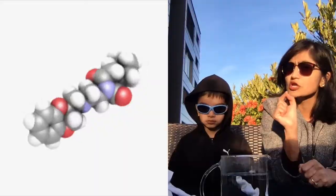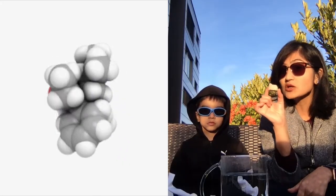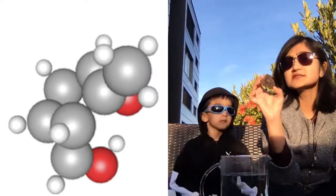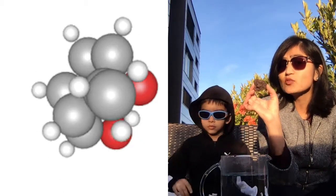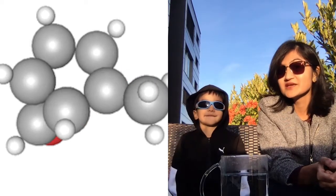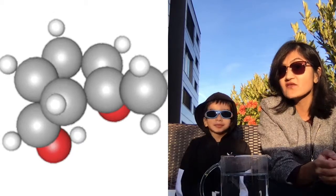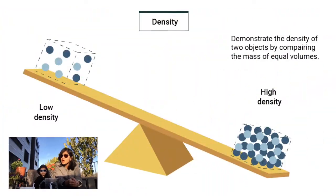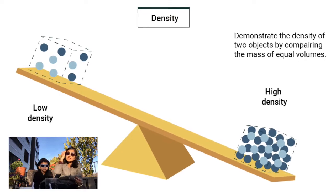Do you know what density means? Well, everything around us is made up of tiny molecules. In some objects, these molecules are jam-packed together, just like in this stone. All the molecules in this stone are jam-packed together, and in some other objects, like this piece of wood, the molecules are loosely packed together. This is what density means. Objects that are jam-packed have higher density, and more loosely packed objects have less density.